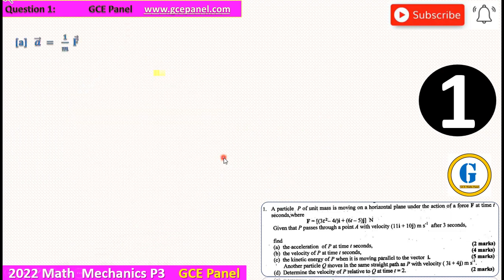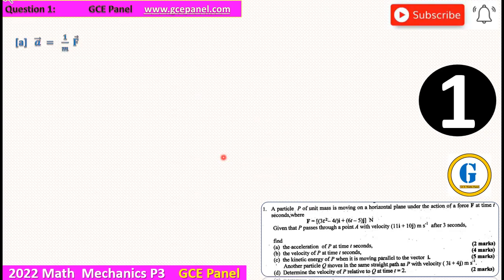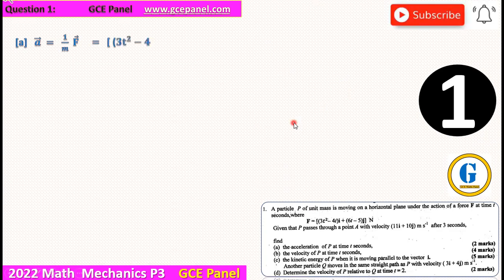We know that acceleration, which is a vector, is defined as 1 over mass times the force. But we have been told here that the mass is one unit. Therefore, this will give us 1 over 1 times the force. So this will be equal to the same value that we just have there. That's in meters per square seconds.